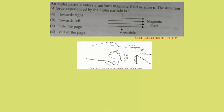For easier understanding, let's review Fleming's left-hand rule. The forefinger indicates the direction of the magnetic field, which here goes from left to right. The alpha particle is a positively charged particle, so the direction of current aligns with the direction of motion of the alpha particle, which is in the downward direction.